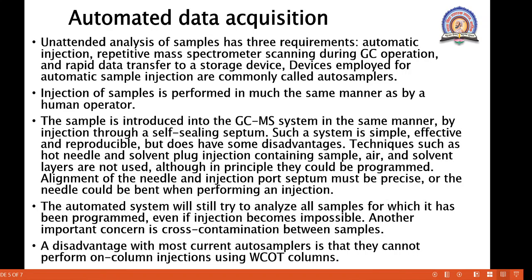The sample is introduced into the GCMS system by injection through a self-sealing septum. Such a system is simple, effective, and reproducible, but does have some disadvantages. Techniques such as hot needle and solvent plug injection containing sample air and solvent layers are not used, although in principle they could be programmed. Alignment of the needle and the injection port septum must be precise.